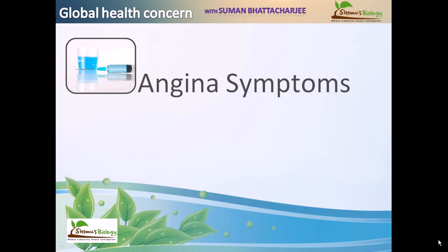Welcome back guys, welcome to another session of Global Health Concern. I am your host Shuman Bhattachatji on behalf of Shomu's Biology. We are talking about angina pectoris. We have already talked about what angina pectoris is and its different properties. Angina is a heart problem — a problem with your coronary circulation system due to blood plaque or blood clotting in your coronary artery, which reduces the supply of oxygenated blood to your heart, resulting in immense chest pain.